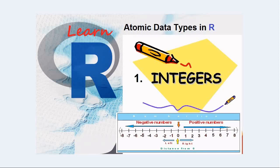Now the first data type is integers. Integers are whole numbers: 0, positive numbers on the right side, and negative numbers on the left side, on a number line.